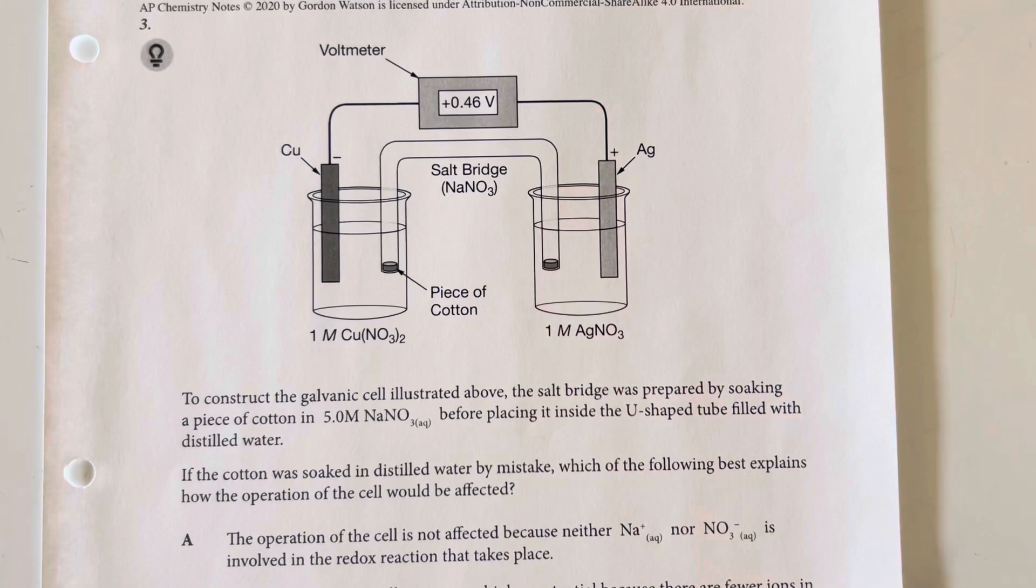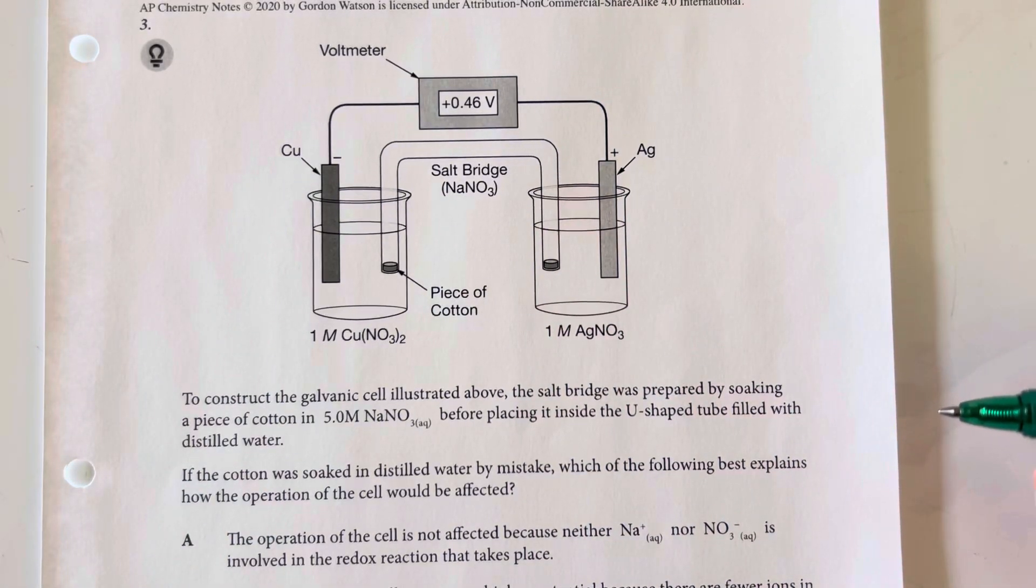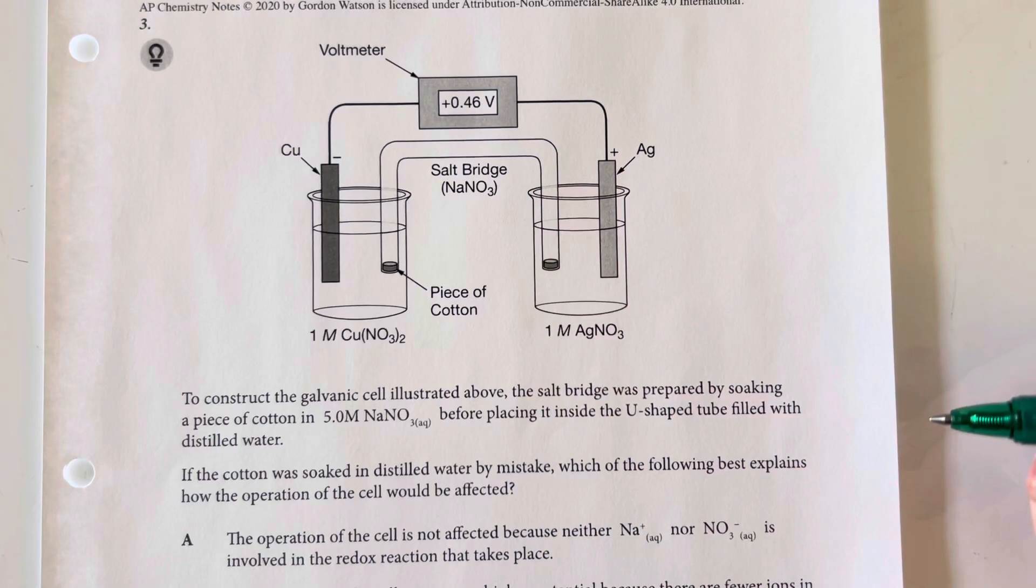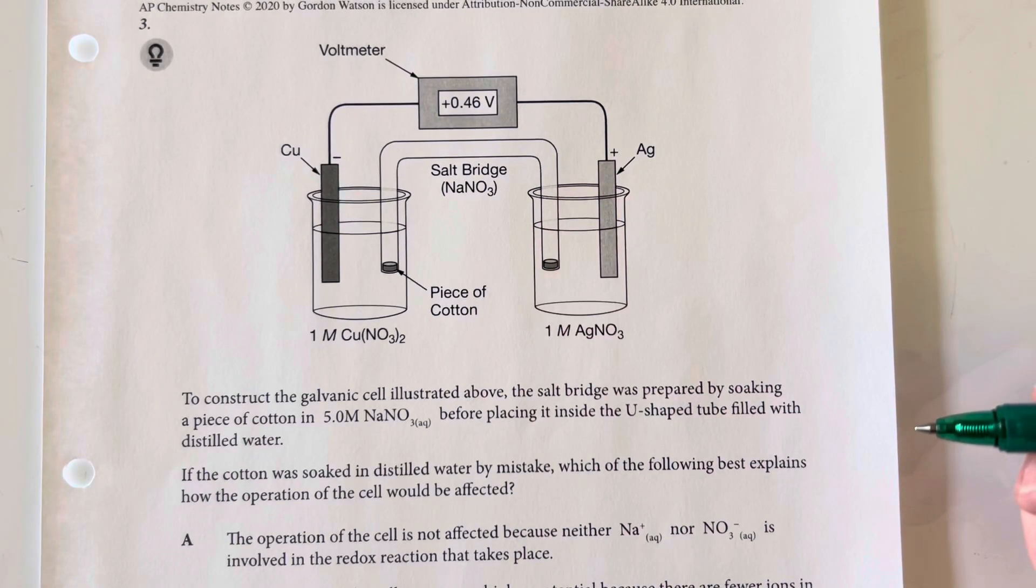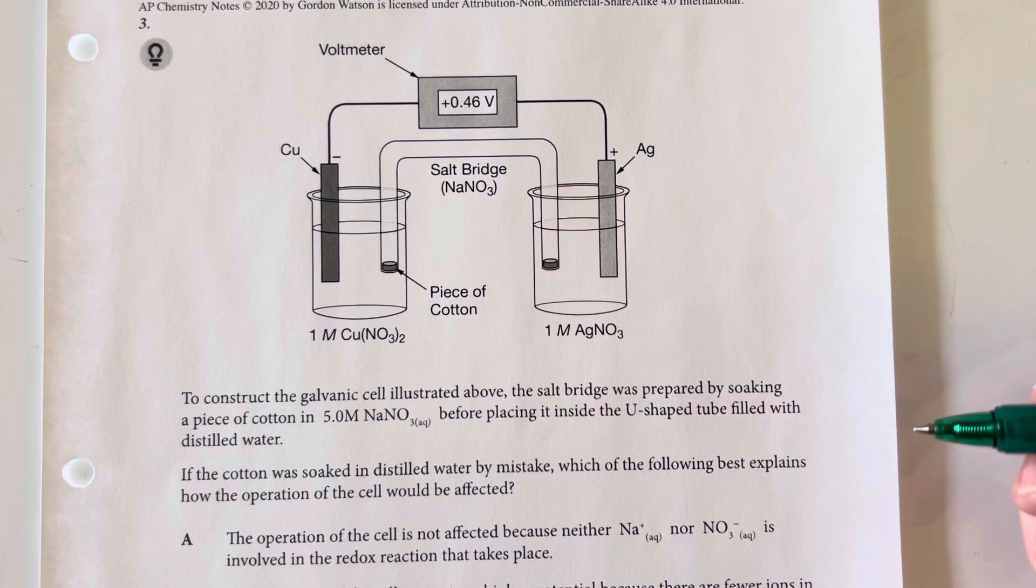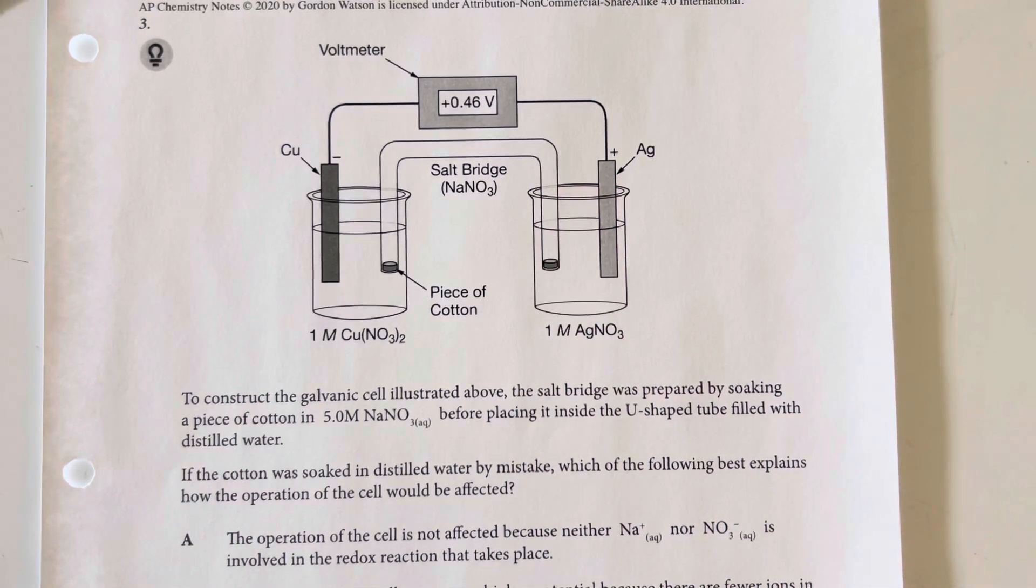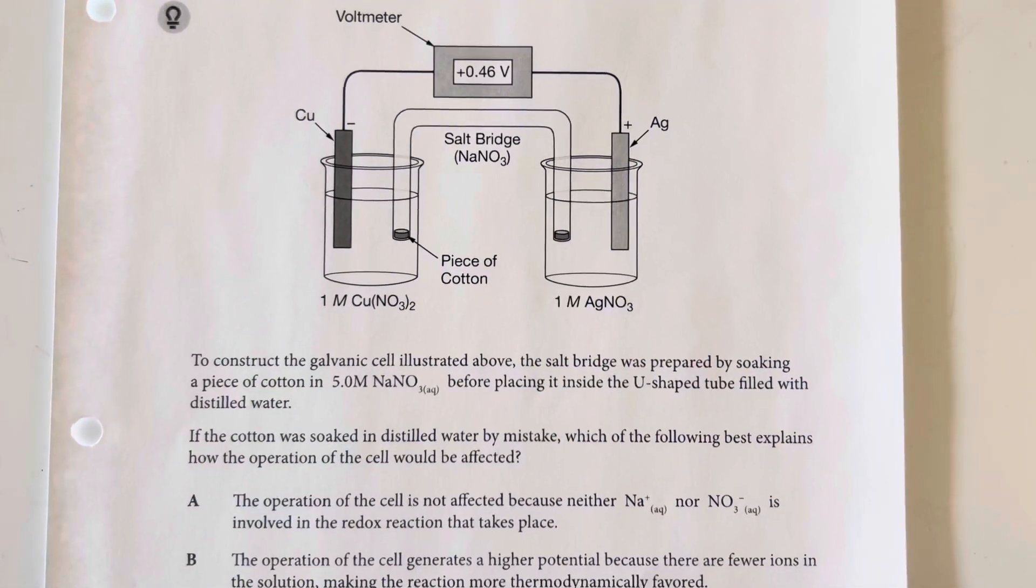To construct the galvanic cell illustrated above, the salt bridge was prepared by soaking cotton in 5 molar sodium nitrate before placing it inside the U-shaped tube filled with distilled water. If the cotton was soaked in distilled water by mistake, which best explains how the operation would be affected? If we don't have a salt bridge, then we don't have a cell.